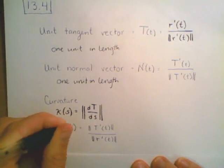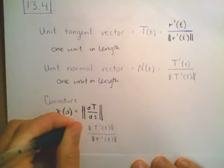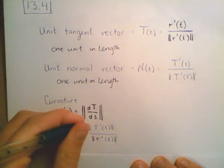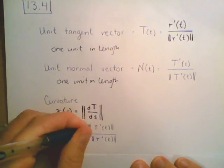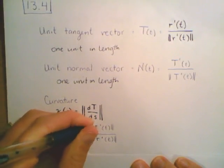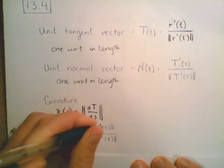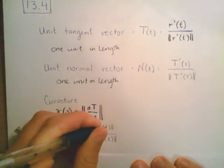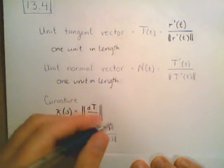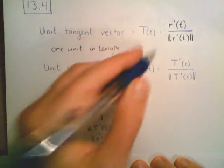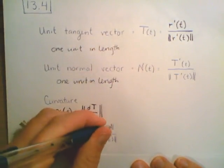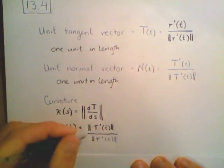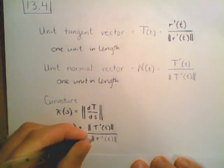When we compute curvature in real life, we have to take into account that not all parameterizations are arc length parameterizations. So curvature is defined as the magnitude of the derivative of our unit tangent vector function.